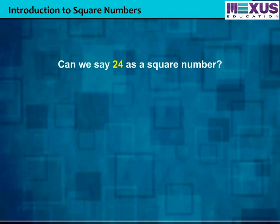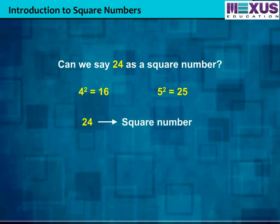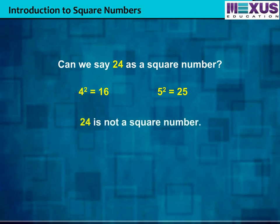For example, can we say 24 is a square number? We know that 4 square is equal to 16, and 5 square is equal to 25. So if 24 is a square number, then it must be the square of a natural number between 4 and 5. But there is no natural number between 4 and 5. So we can say that 24 is not a square number.